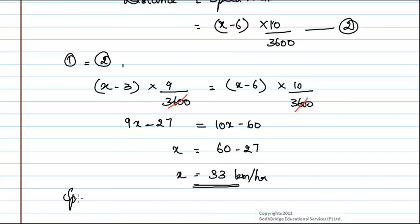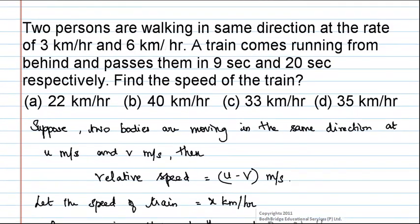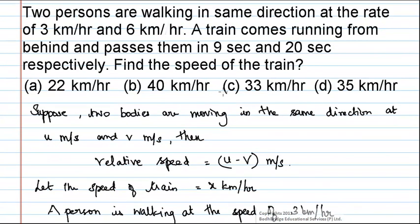Therefore, speed of train is equal to 33 km per hour, which is option C.